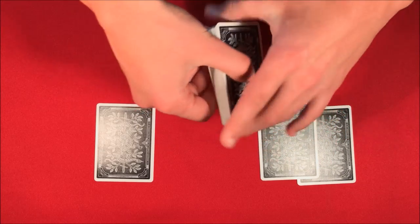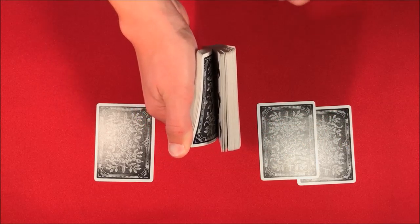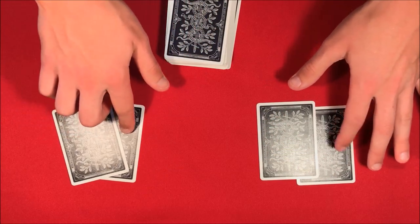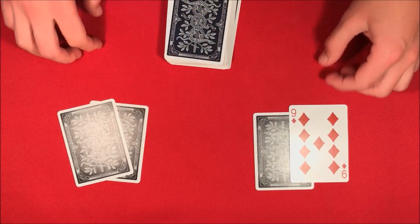We'll do this one more time. The spectator says stop here or they could say keep going. Let's say they want to stop exactly at this point. These are my two predictions on the bottom - my first prediction right here is the nine of diamonds and my second was the 10 of clubs.